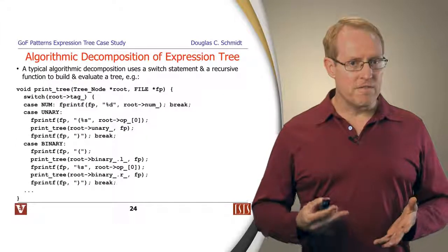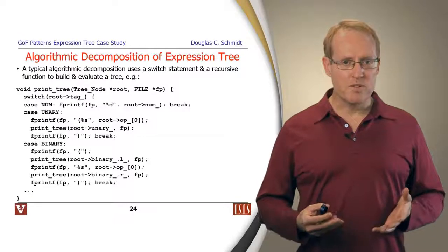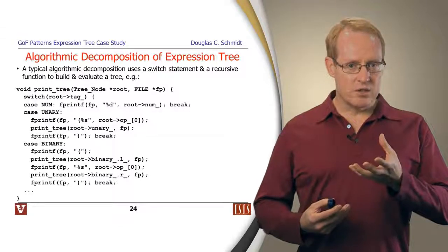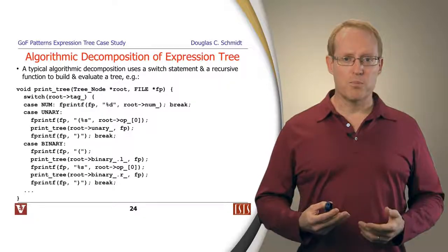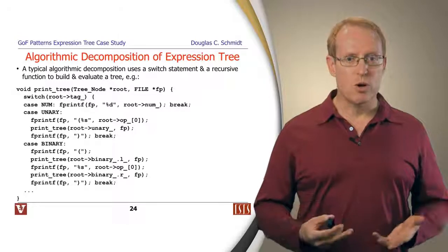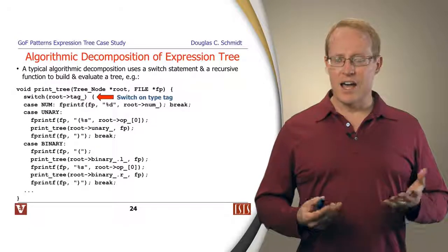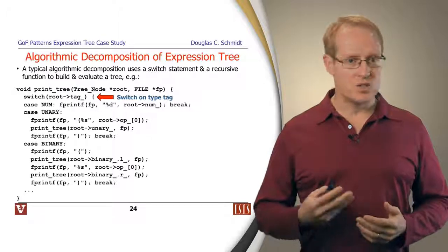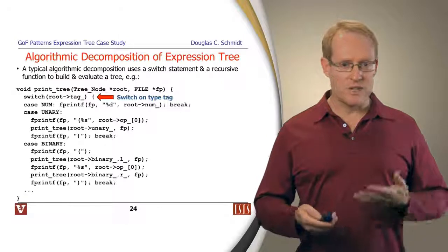Here's an example of a function we might write using an algorithmic decomposition. This particular function is given an expression tree by its root and a file pointer to print to, and it traverses through the tree recursively and does the appropriate things it needs to do. As you can see, one of the very first things it does is it switches on the type tag, and then depending on the type, it'll take various actions.